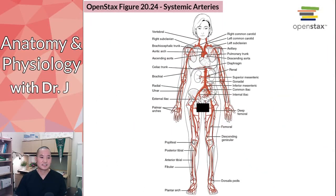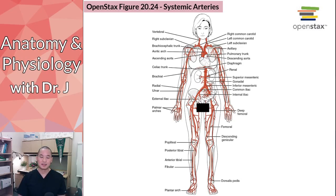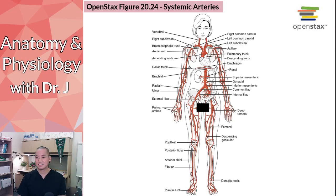There are many arteries, veins, and vessels. Rather than going through every single one, a good place to start is with these two overview images showing the major arteries and veins of the body. Anything from this list is fair game for the test — they're relatively big and easy to identify.